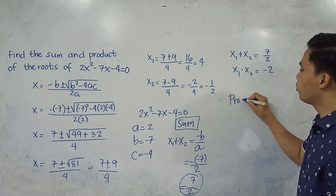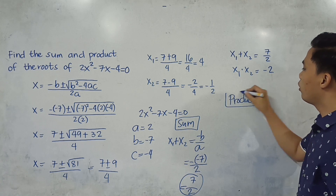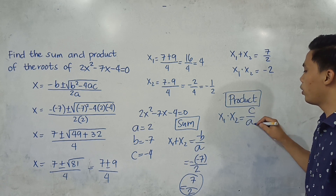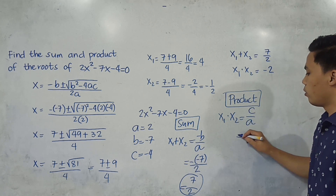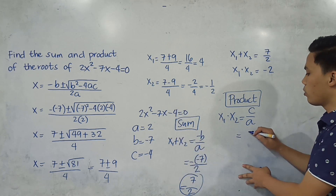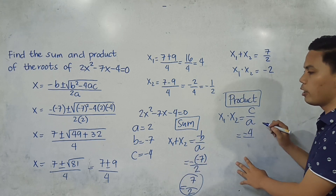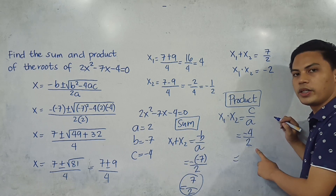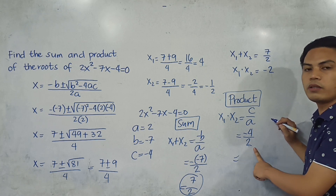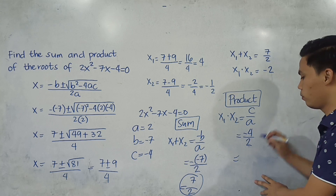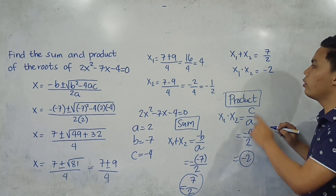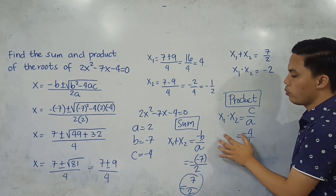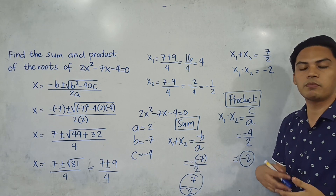For the product, the formula is x sub 1 times x sub 2 equals C over A. We substitute the values: C is negative 4 and A is 2. So we have negative 4 over 2, which simplifies to negative 2. The answer we got using the shortcut is just the same as the answer we got before. This process is much easier compared to the previous method.